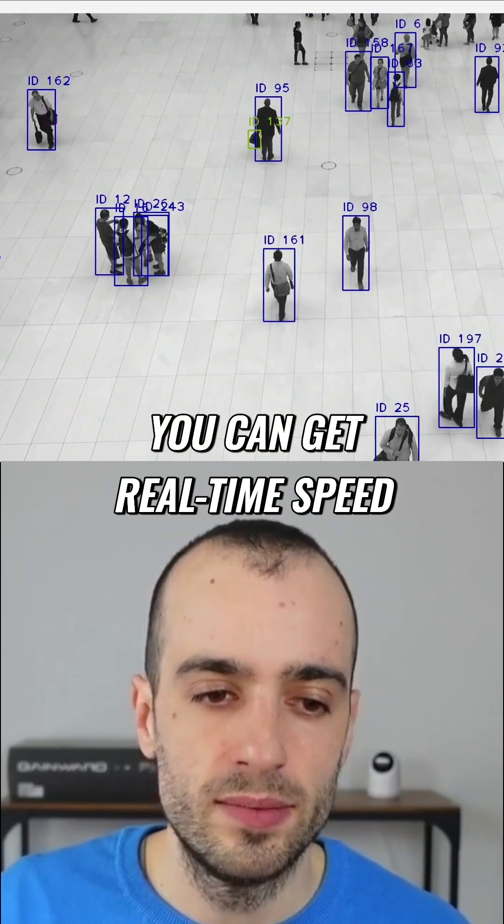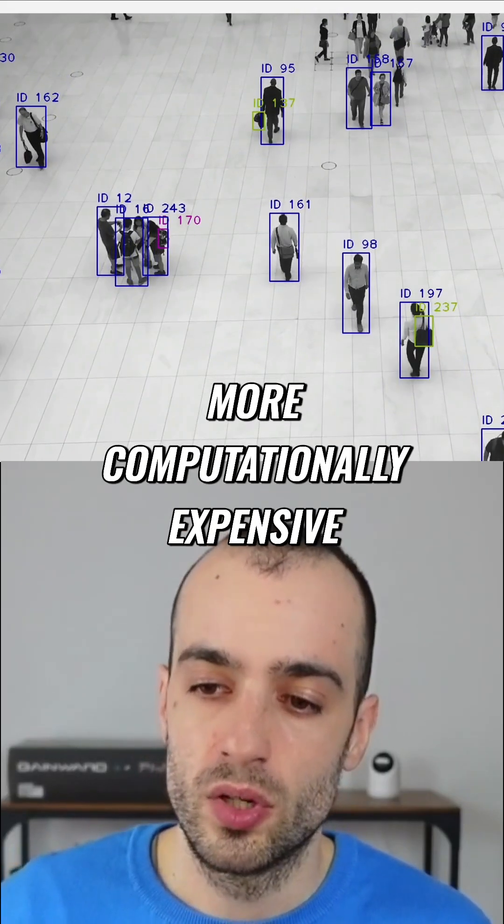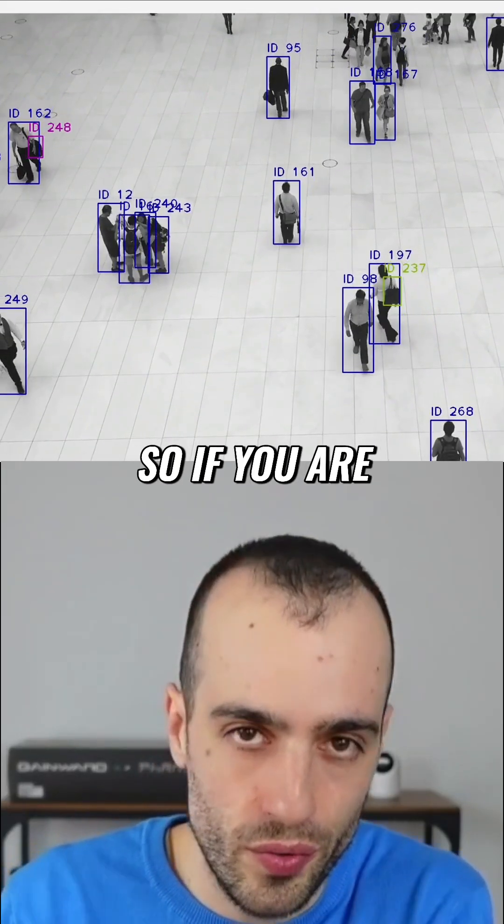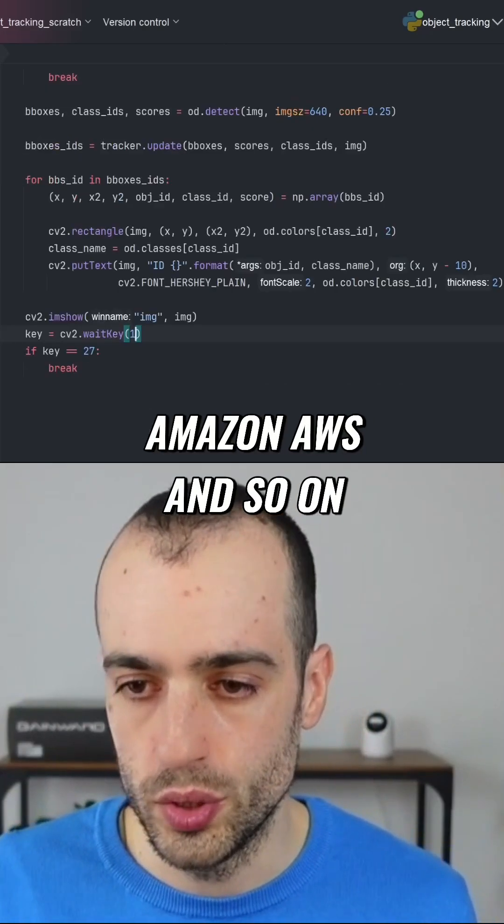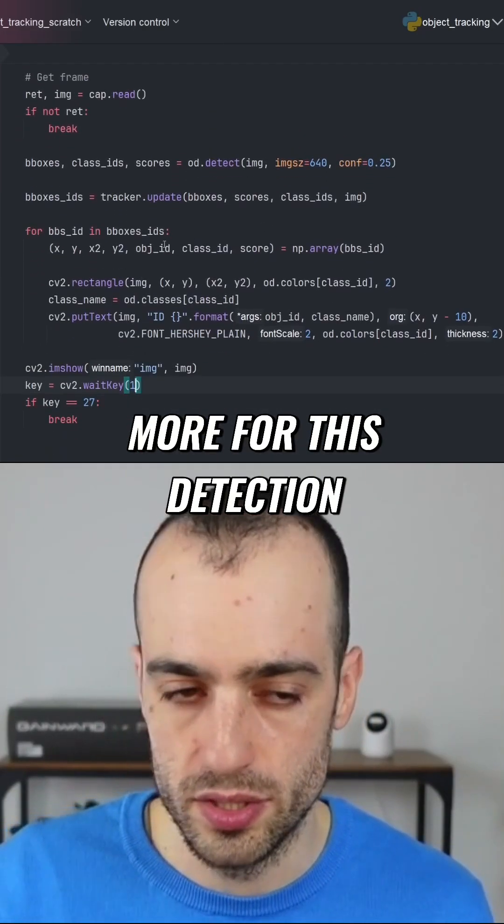Of course, you can get real time speed but it will be much more computationally expensive. So if you are renting graphic cards, if you are using Amazon, AWS and so on, you will pay much more for this detection.